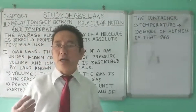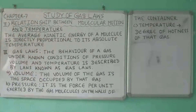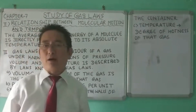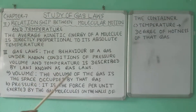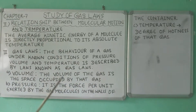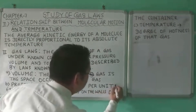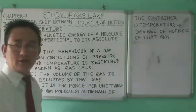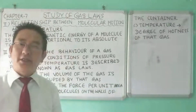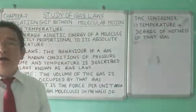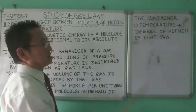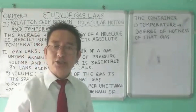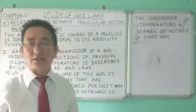Volume is the space occupied by a body; the volume of the gas is the space occupied by that gas. Pressure is the force exerted per unit area by the gas molecules on the walls of the container. Temperature is the degree of hotness or coldness of a body; the temperature of the gas is the degree of hotness of that gas. This brings us to the end of today's class, thank you.